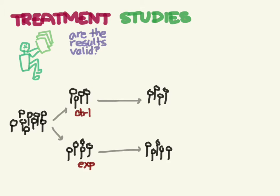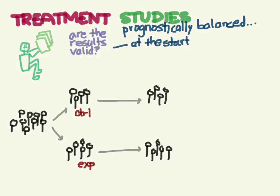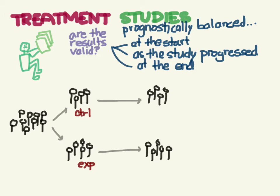Let's start by talking about the first question: are the results valid? What that really means is we want to look at the study and see if we can trust the results. To answer that question, we want to know if the two groups are pretty similar in all respects except for the fact that they got the treatment. We want to know if they are prognostically balanced at the start, as the study progresses, and at the end.